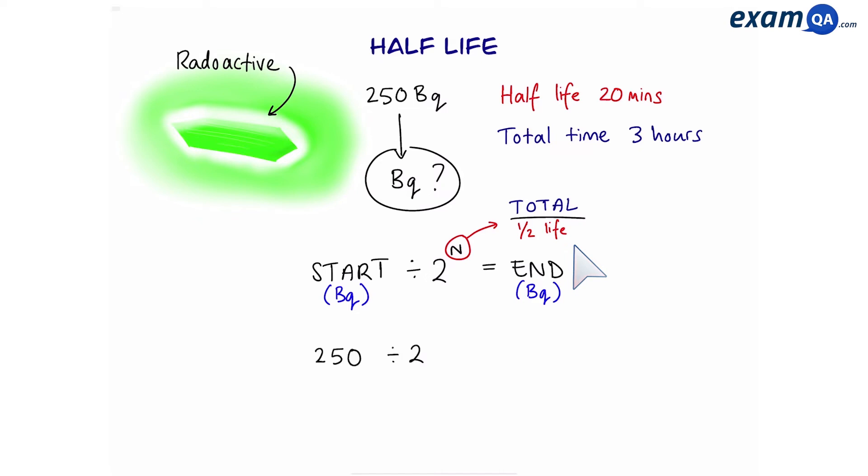So let's try this question then. So the start is 250, we're then going to divide it by 2 to the power of n. So let's work out n. First of all, our total time is in hours, so we're going to times it by 60 to make it into minutes. So we have 180 minutes as the total time, then we're going to divide it by the half-life, which is 20 minutes. That gives us 9. So the value of n is 9. 250 divided by 2 to the power of 9 equals 0.48 becquerels. So after three hours, the radiation dropped from 250 to 0.48 becquerels.